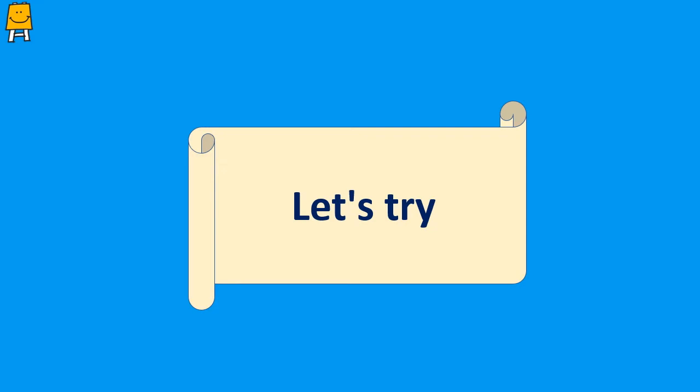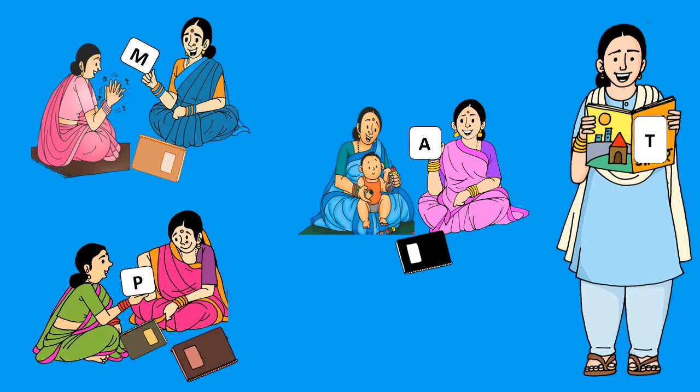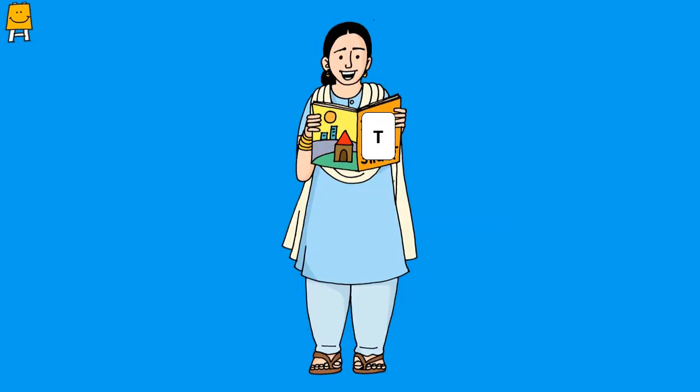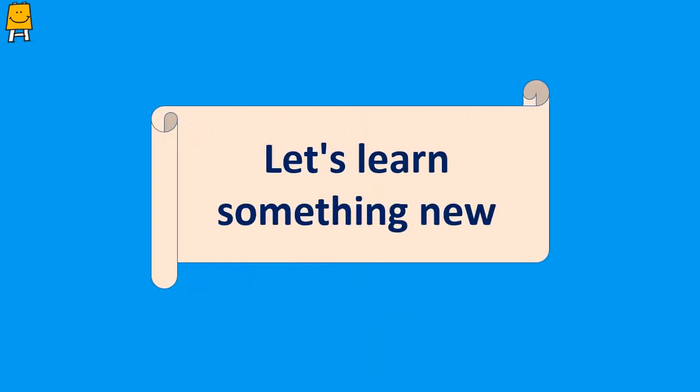Now let us move on to the next activity called 'Let's Try.' Make groups of two mothers each. Put one letter in each group. The group mothers have to find five words that contain that letter. The first group to name five words is the winner. We hope all the mothers had fun doing this activity.